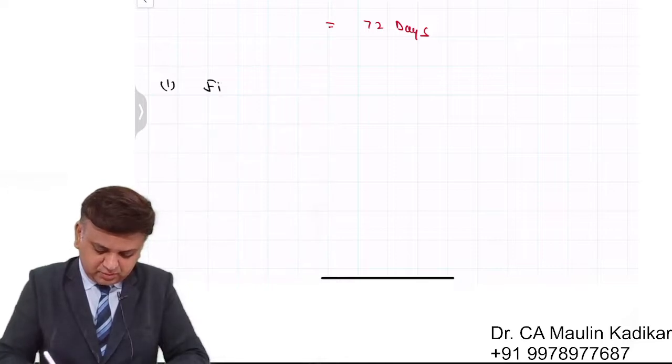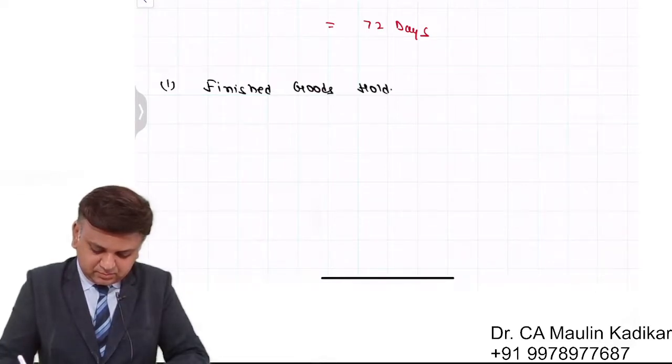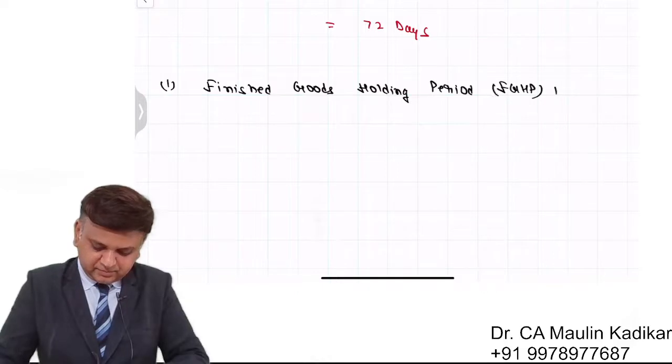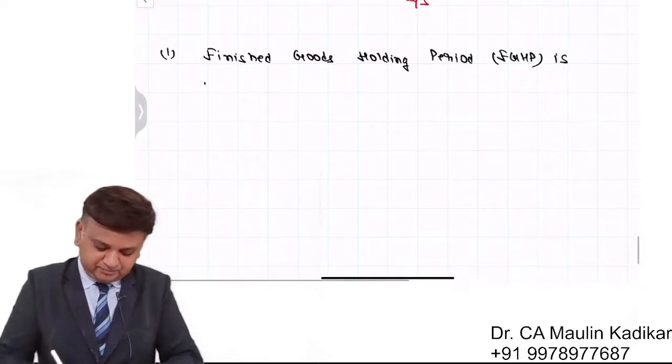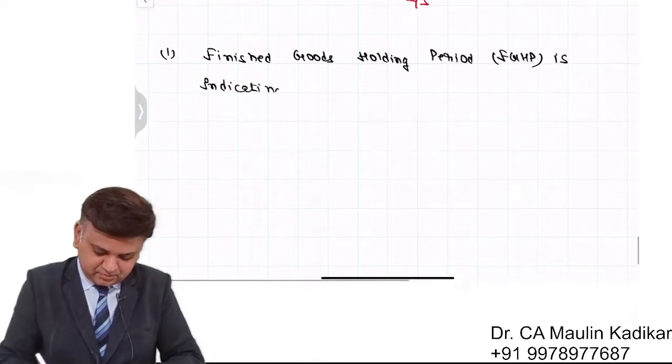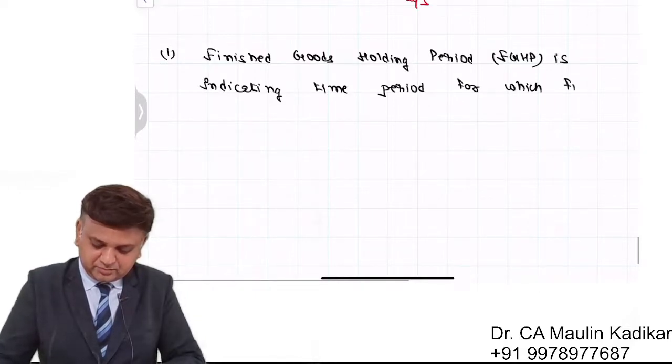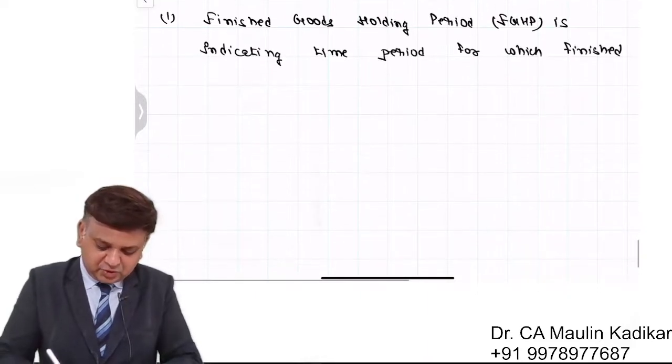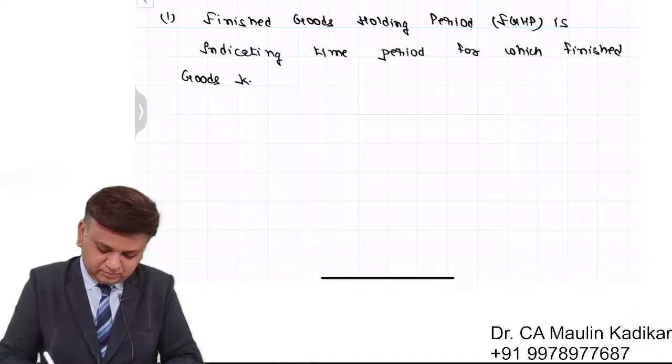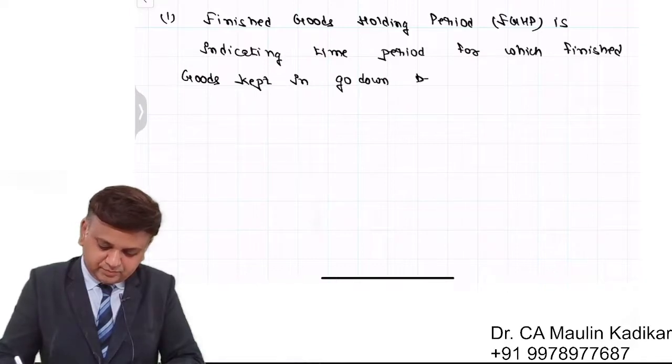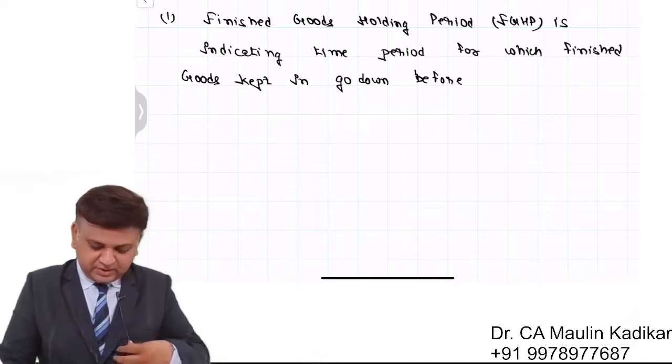Read on first point. Finished goods holding period is indicating time period for which finished goods kept in Godown before selling to customers.